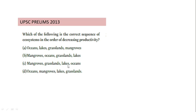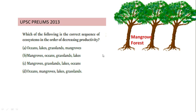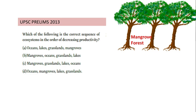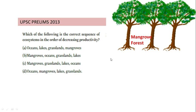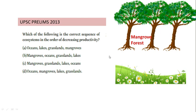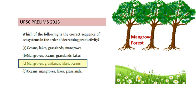We can confirm the option by considering mangroves. Mangroves are forests that are very dense and thick, with a dense canopy, broad leaves, and high chlorophyll content. This means mangrove forests have a lot of photosynthetic activity and thereby the highest productivity. Comparatively less primary productivity is observed in grassland. So the correct sequence in decreasing order is: mangrove, grassland, lake, and ocean.